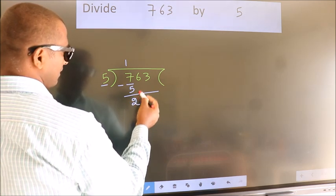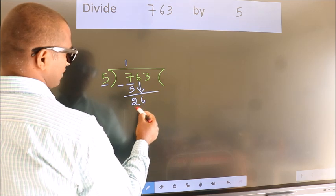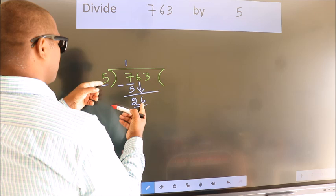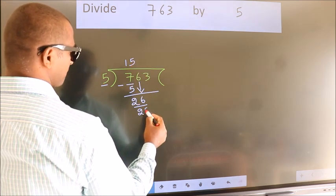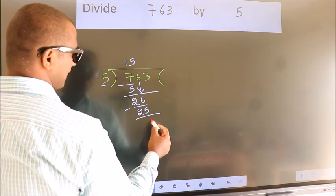After this, bring down the beside number. So 6 down. So 26. A number close to 26 in 5 table is 5 5s 25. Now we subtract. We get 1.